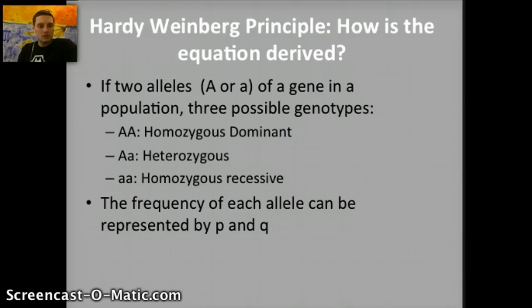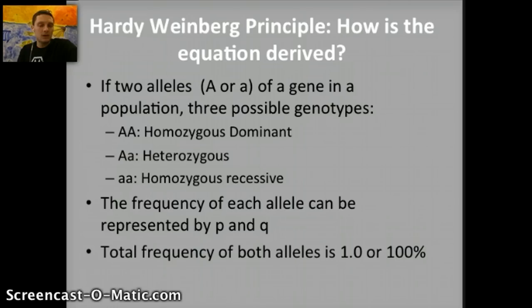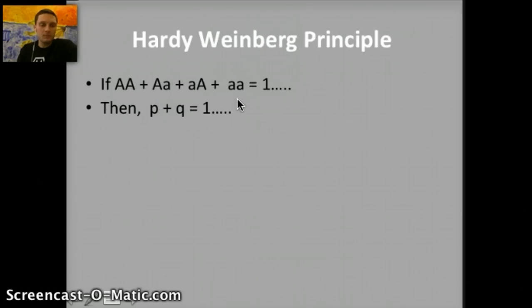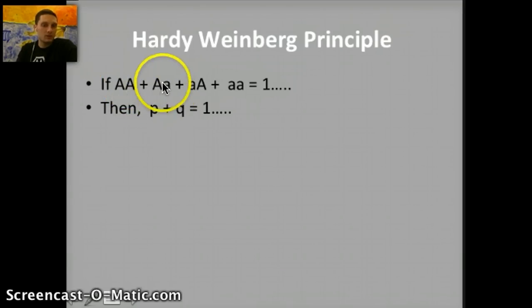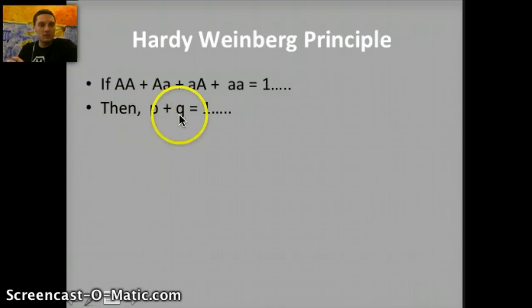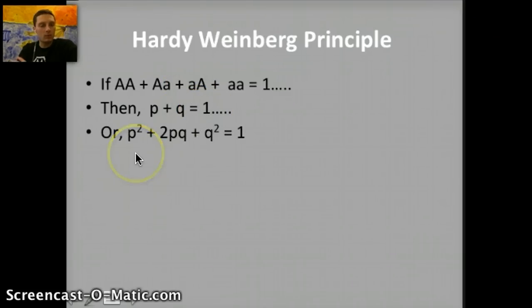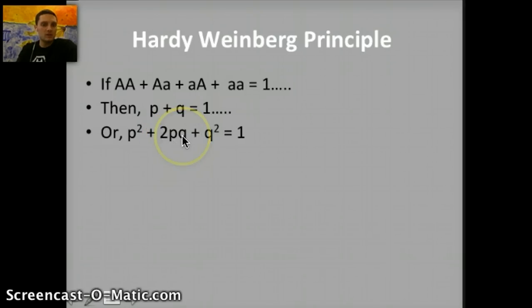For both alleles, the total frequency within the population is going to be equal to 1, or 100%. Both P and Q — dominant and recessive — are going to equal 1. So homozygous dominant plus heterozygous plus homozygous recessive all added up equals 1. If P plus Q equals 1, we can also say that P² plus 2PQ plus Q² equals 1.